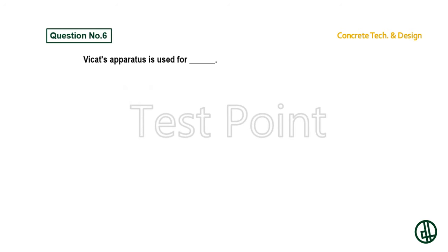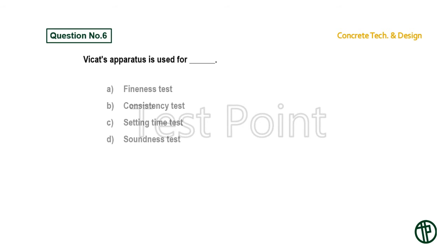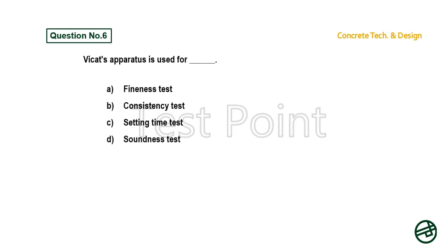Question number 6: Vicat's apparatus is used for — Option A: Fineness test. Option B: Consistency test. Option C: Setting time test. Option D: Soundness test. Answer is Option B: Consistency test.